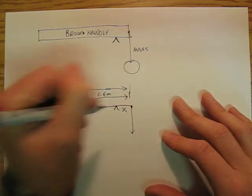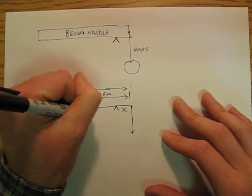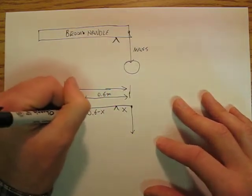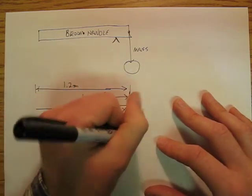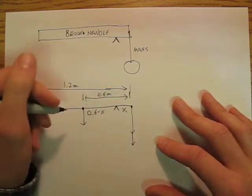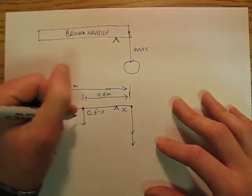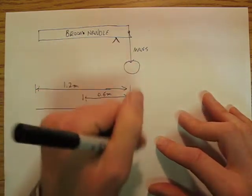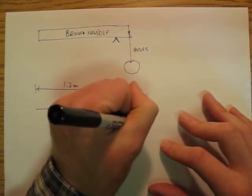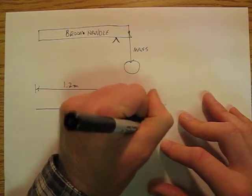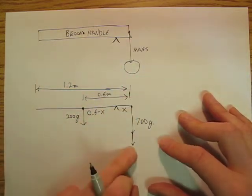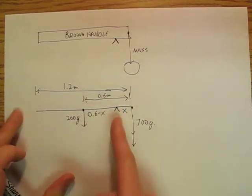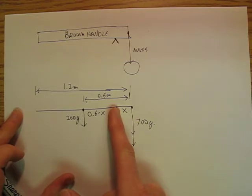This distance is going to be x and this distance is going to be 0.6 minus x. The broom handle also has some force. Let's say that the broom handle is 200 grams and we hang a mass of 700 grams off that edge. Where can I put my finger so that the broom handle balances?